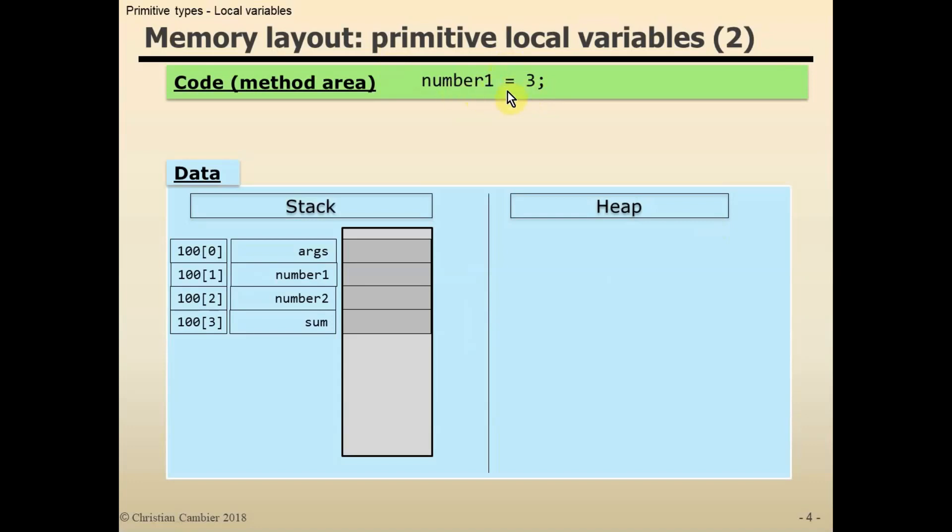Every assignment can be split into three parts. On the right-hand side, we have what we want to assign to my variable. Then the second part is the actual assignment operator. On the left-hand side, we see something that represents the location in memory where the value of 3 will be stored.